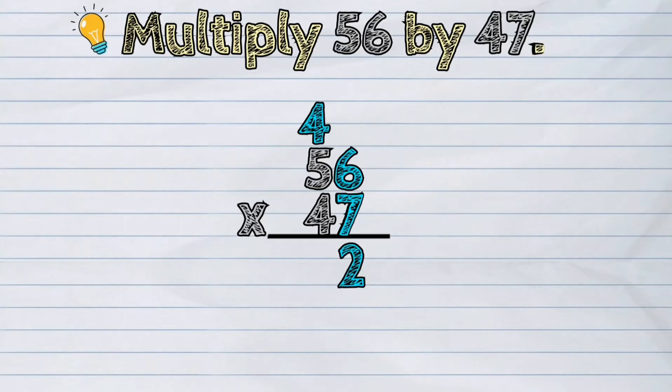Next, we will multiply the bottom ones by the top tens. So, it's 7 ones times 5 tens. The answer is 35 tens. We have to add now the tens we regrouped in the previous step. 35 tens plus 4 tens is 39 tens. Write down the answer next to ones.